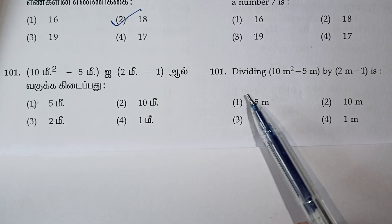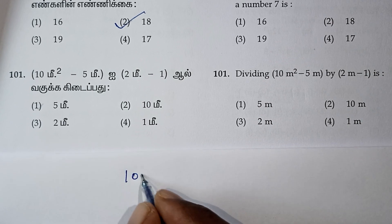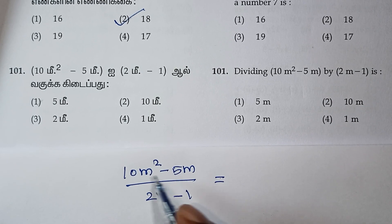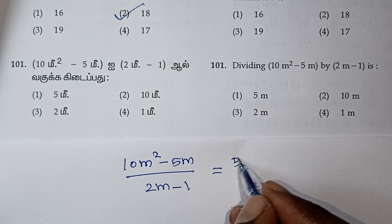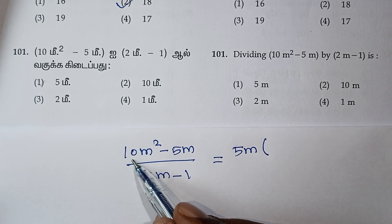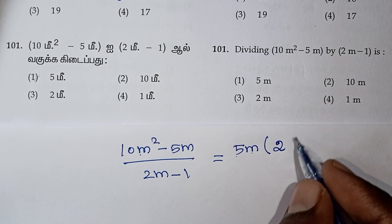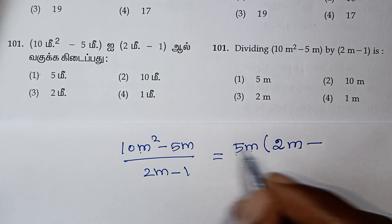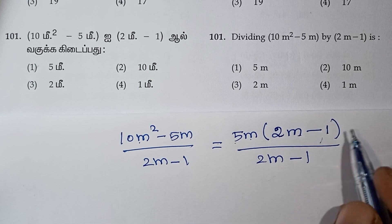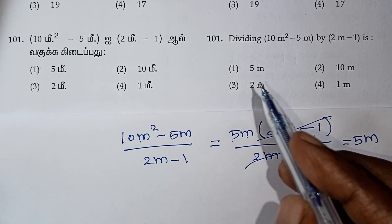Next question: dividing 10m² minus 5m by 2m minus 1. We take out the common factor 5m from the numerator: 5m(2m minus 1) divided by (2m minus 1). The (2m minus 1) cancels, and the answer is 5m. The factorization is correct and 5m is the correct answer.